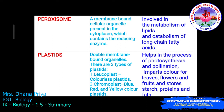Plastids are double membrane-bound organelles. There are three types: leucoplast, chromoplast, and chloroplast. Leucoplast is colorless. Chromoplast gives brightly colored pigments to plants — colors such as blue, red, and yellow. Chloroplast contains chlorophyll which gives a green pigment to the plant.